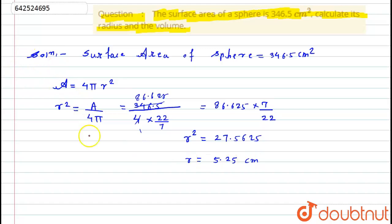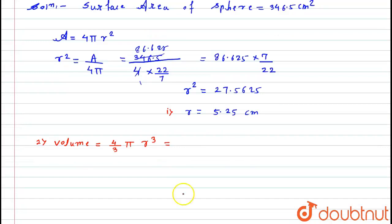Now the second thing it is asked to find the volume of the sphere. Hence here I will say volume of sphere is nothing but equals 4 upon 3 πr³. This will become equals to 4 upon 3 into value of π is 22 by 7 into r we have just calculated 5.25 bracket cube.